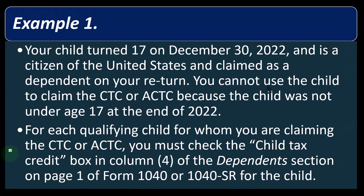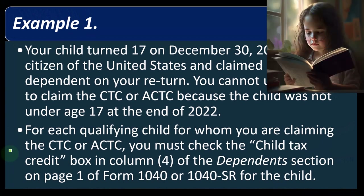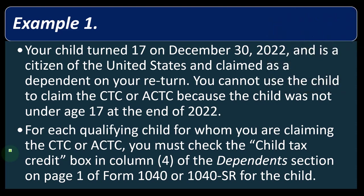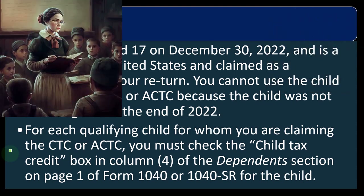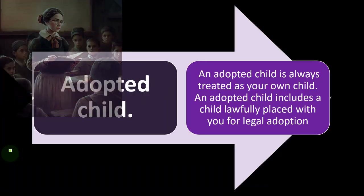For each qualifying child for whom you are claiming the CTC or ACTC, you must check the 'Child Tax Credit' box in column 4 of the dependents section on page 1 of Form 1040. Page 1 is where you put your dependents, social security numbers, and all personal information. You check off if they qualify for the child tax credit; the actual calculation of the child tax credit is on page 2 of Form 1040.